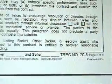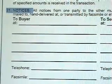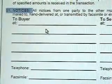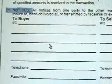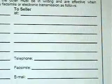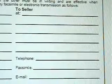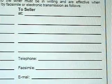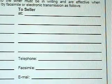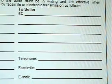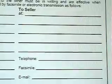Paragraph 21 is the notices. In this paragraph, we would need the buyer's name, address, phone number, fax number, and email. We would also need the seller's information the same — seller's name, phone number, address, fax, and email. This paragraph states that for the contract to be in effect, it must be in writing, hand delivered, faxed, or emailed to the prospect.